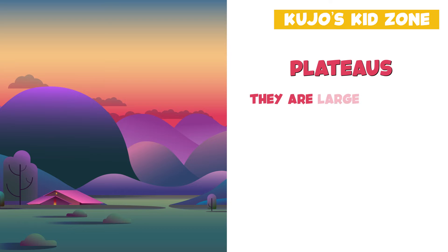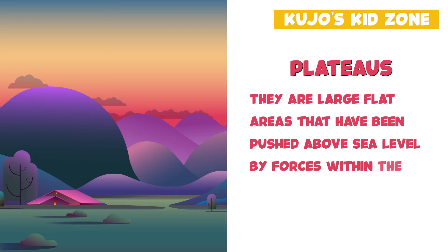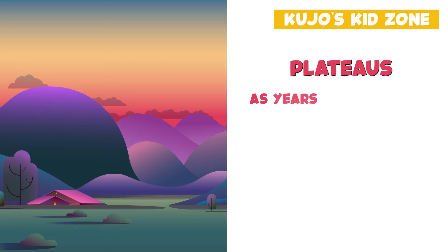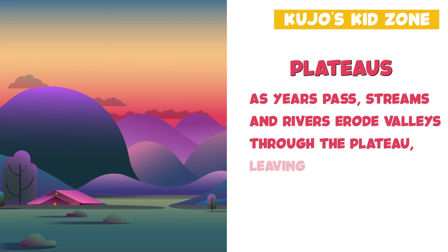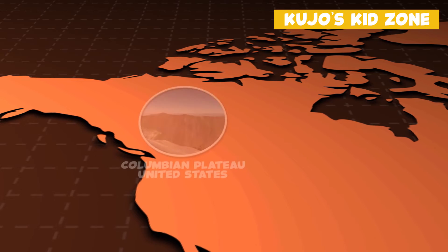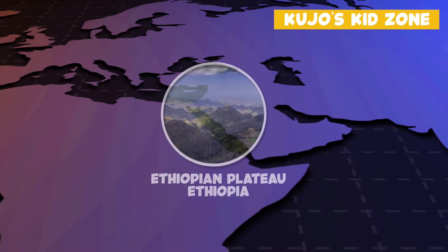Plateaus are large, flat areas that have been pushed above sea level by forces within the Earth or have been formed by layers of lava. As years passed, streams and rivers erode the valleys through the plateau, leaving the mountains in between the valleys. An example would be the Colombian plateau or the Ethiopian plateau.